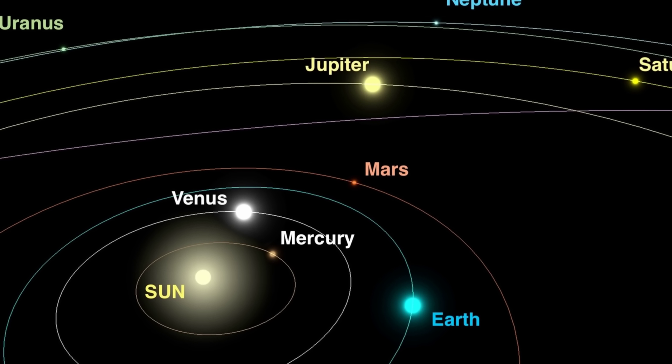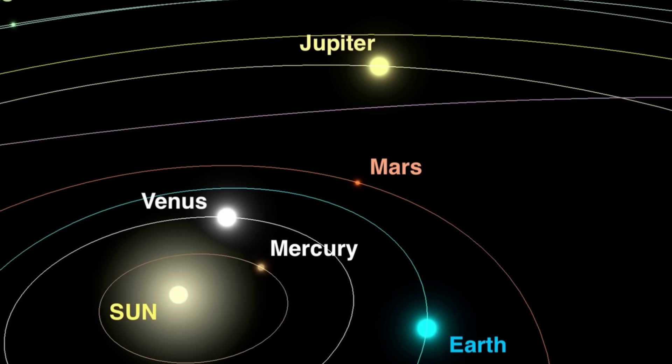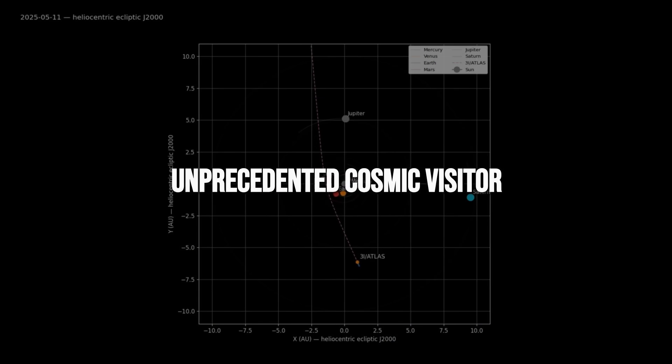A new interstellar object just blasted into our solar system, moving nearly in line with the orbits of the planets, not like any cosmic visitor we've ever tracked.